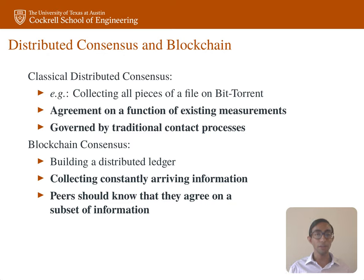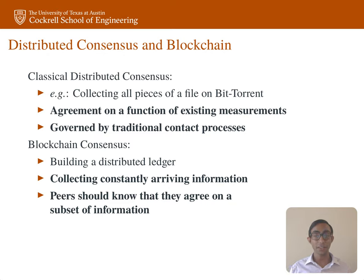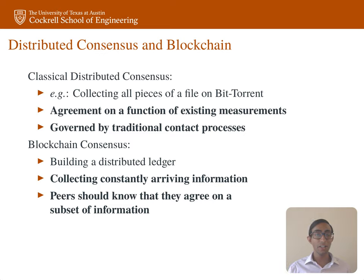Blockchain is a new paradigm for distributed consensus, and we'll start out by discussing how it differs from previous paradigms. In the classical paradigm, we have N peers or agents who are trying to collectively agree on a value of a function of some existing measurements, trading information via traditional contact processes. If we think about collecting pieces of a file on BitTorrent, this is a finite time process.